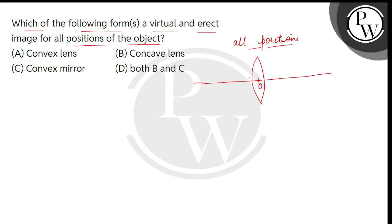All positions means that the object is at infinity, or at the center of curvature, or at the focus, or between the focus and the optical center. It may be present on the left side or on the right side.